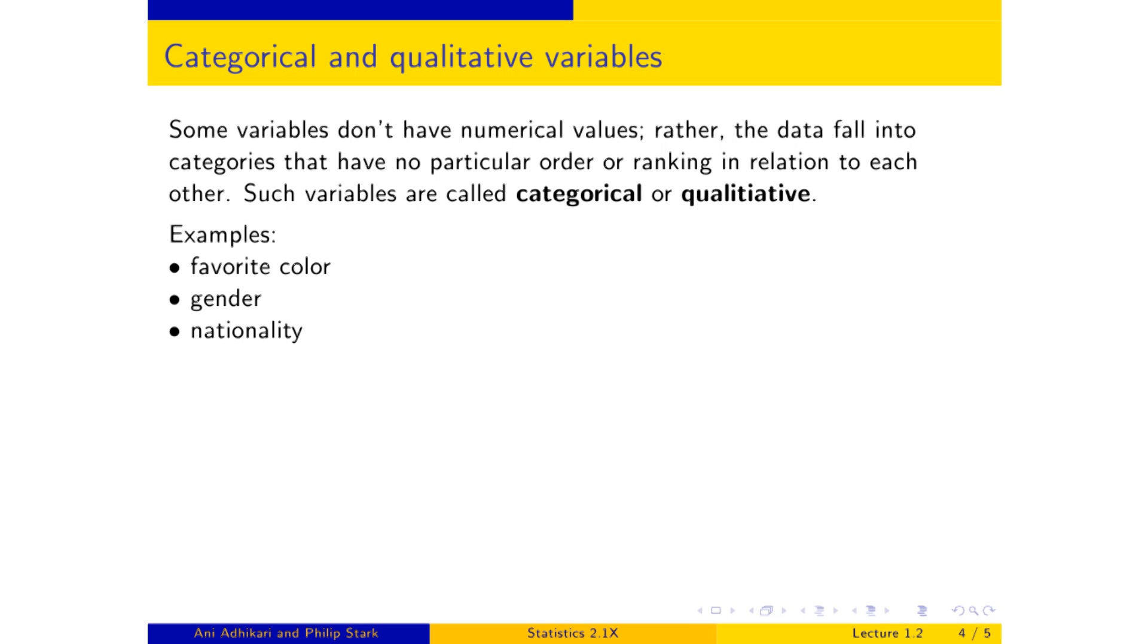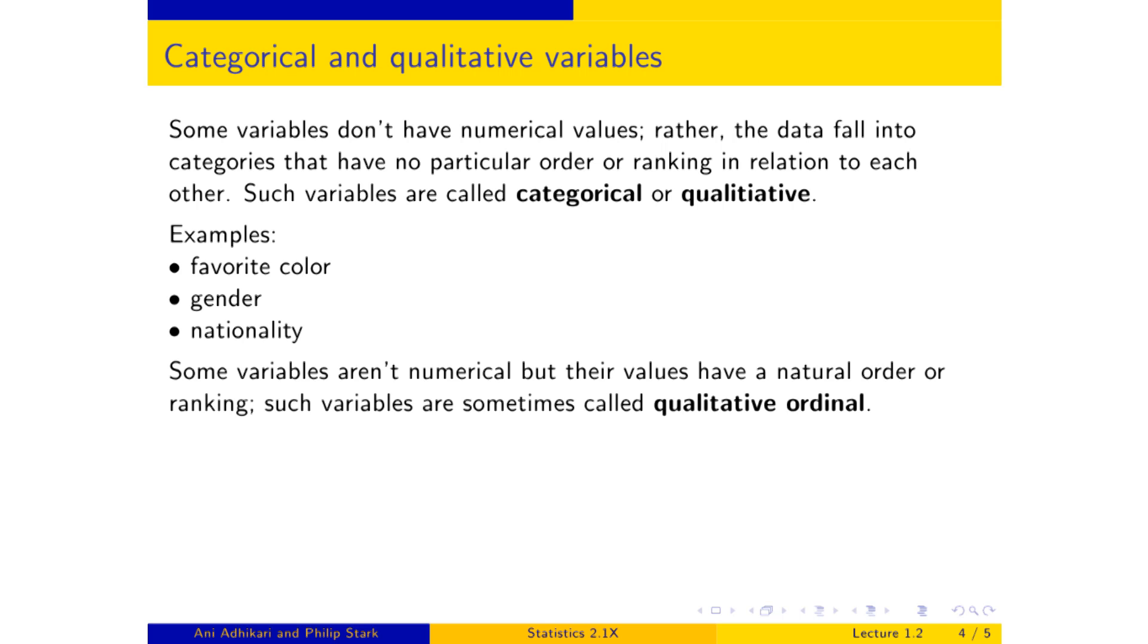There are some special qualitative variables where, even though the values aren't numerical, they do have a ranking. For example, if you measure temperature not in degrees Fahrenheit or Celsius, but just as low, medium, or high, a very coarse measurement, low, medium, and high are categories which have a clear ranking relative to each other.